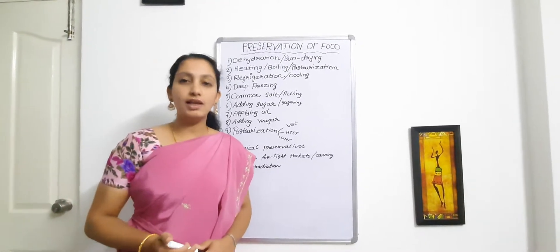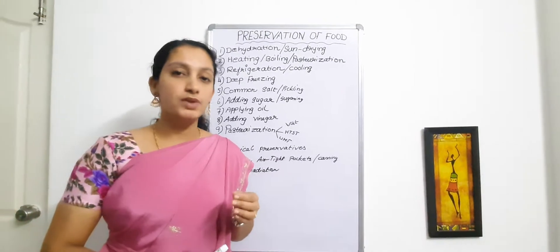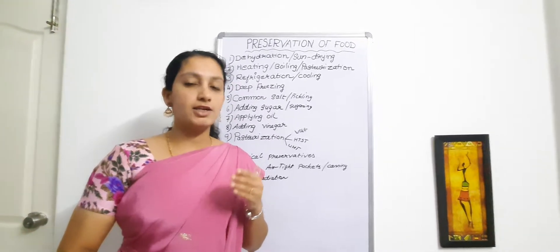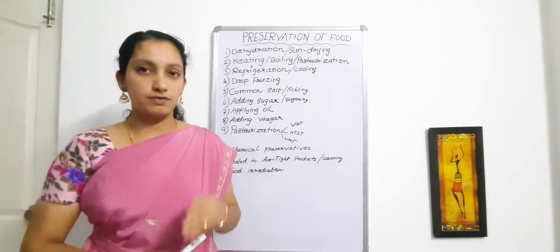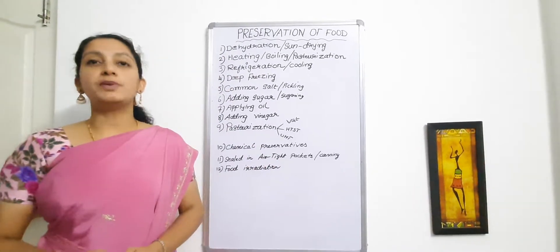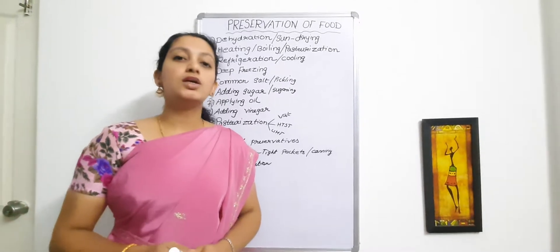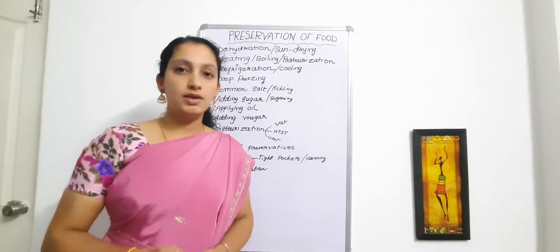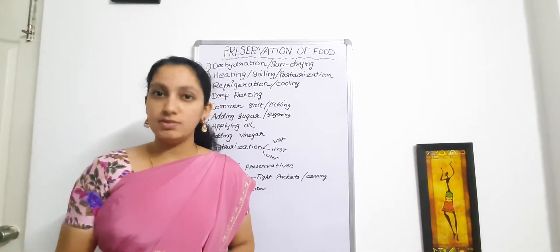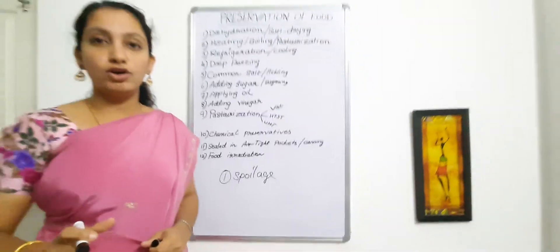First, let's see what preservation of food means. By the word itself, preservation means something you are preserving to avoid spoilage, and here the item being preserved is food. The definition of food preservation is: the method or processing technique which is used to prevent the growth of microorganisms, thereby preventing the deterioration or spoilage of food caused by these microorganisms.